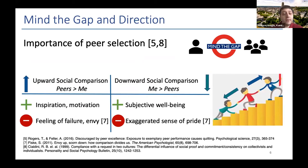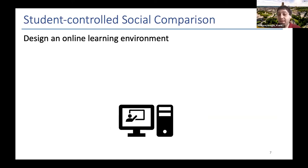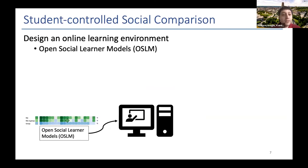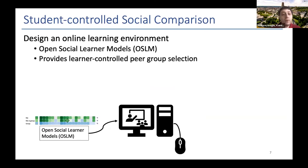These findings show the importance of peer selection in social comparison. For example, regarding upward social comparison — comparing yourself with peers who are better than you — it is better to keep this gap at a reachable limit to keep motivation high and decrease possible negative feelings like feeling of failure. Following these suggestions, we designed an online learning environment using open social learner model features, extended by providing learner-controlled peer group selection.